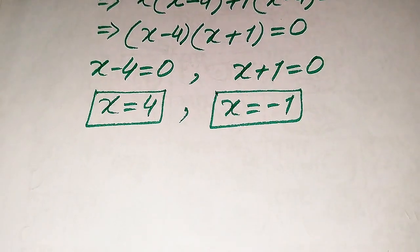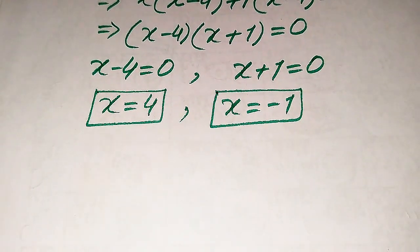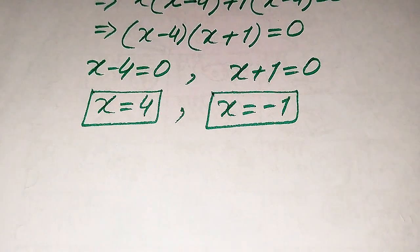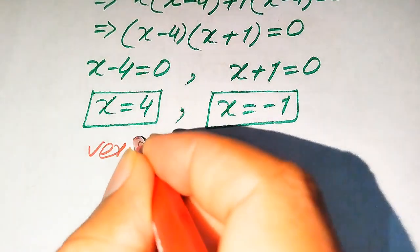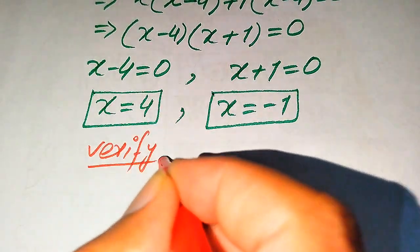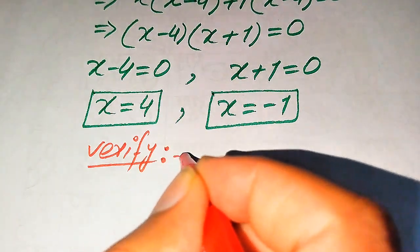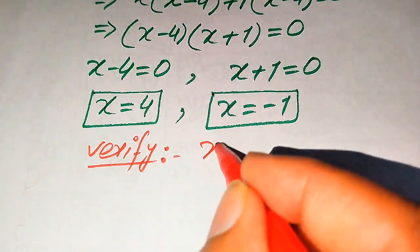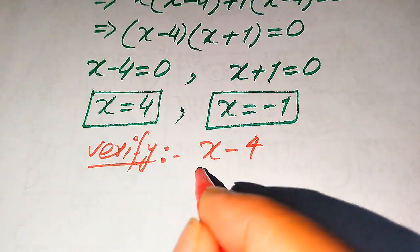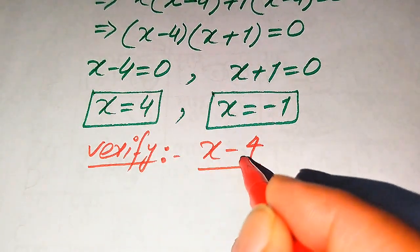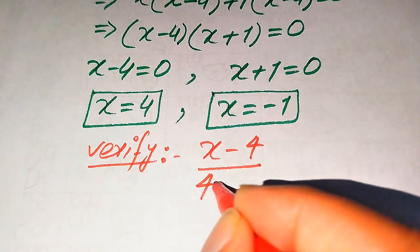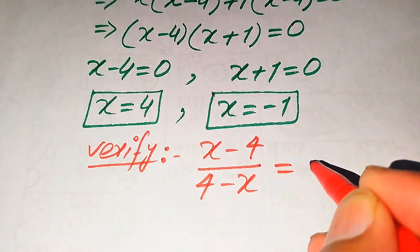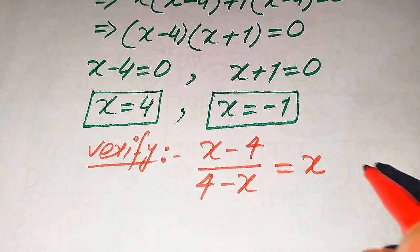From the first method we get two roots of the given equation. In the next steps we need to verify whether both of these values are solutions or extraneous roots. For verification we copy down the given equation: (x minus 4) divided by (4 minus x) equals x.